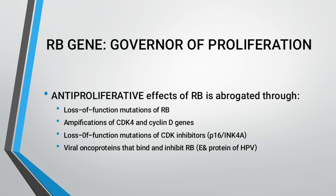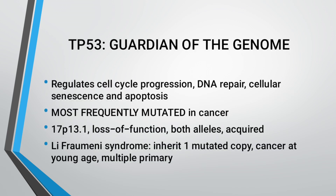Amplification of CDK4 or cyclin D gene, loss-of-function mutations of CDK inhibitors such as p16/INK4A, and viral oncoproteins that bind and inactivate the RB protein — such as the E7 protein of HPV — all disrupt the cell cycle. TP53 regulates the cell cycle process and DNA repair, cellular senescence, and apoptosis. Most cancers have mutated TP53. Loss-of-function mutations in TP53, both alleles affected, are associated with Li-Fraumeni syndrome — where inheriting one mutated copy leads to cancer at a young age and multiple tumor types.